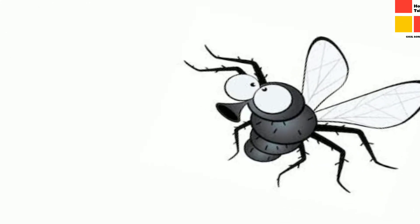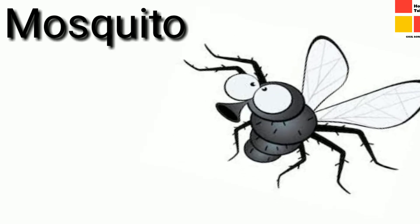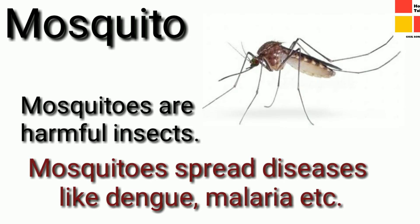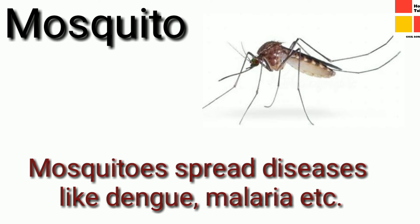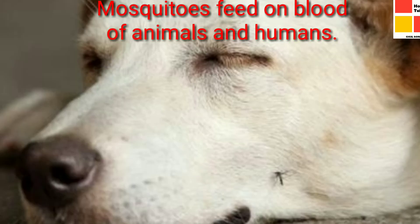Children, can you name this insect? It is very familiar to you, isn't it? Yes, mosquito. Mosquitoes are very harmful insects. Do you know why? Because they spread diseases. Diseases means illness. And do you know what's their food? They feed on the blood of animals and humans.